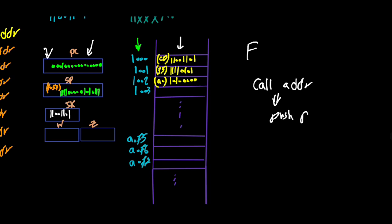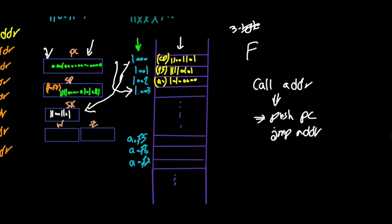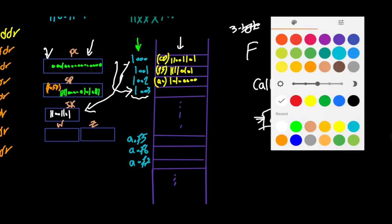So the first thing the CPU needs to do is push the value of the PC. When the contents of the memory cell are brought into the CPU, the CPU understands this is a three-byte instruction. Therefore the value of PC would be incremented to point to the next instruction, so the address would be 1003h. This address — the address of the next instruction — should be pushed onto the stack. Each hexadecimal digit is four bits, so this is 16 bits or two bytes: 10h is the higher byte and 03h is the lower byte.